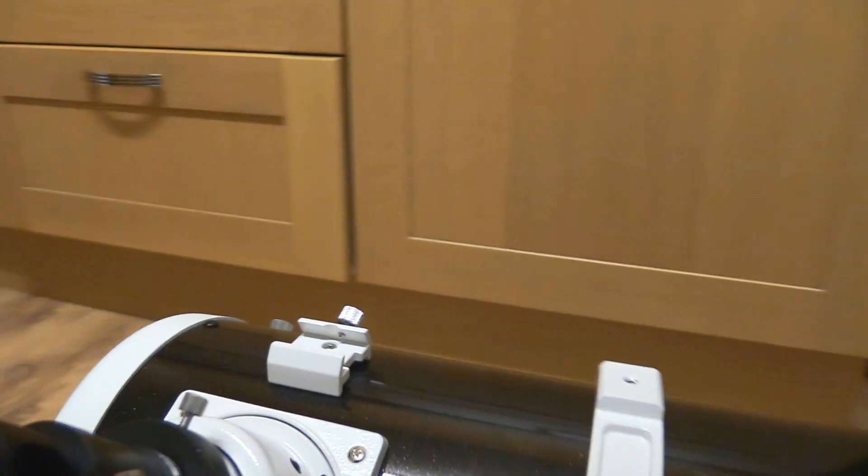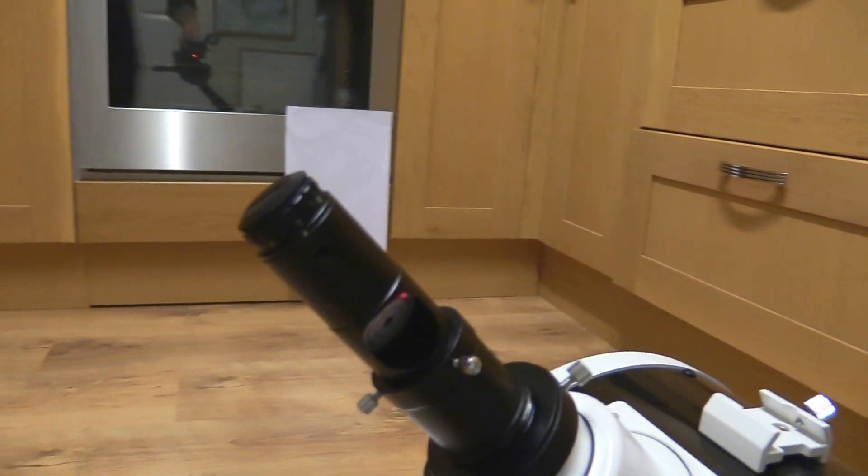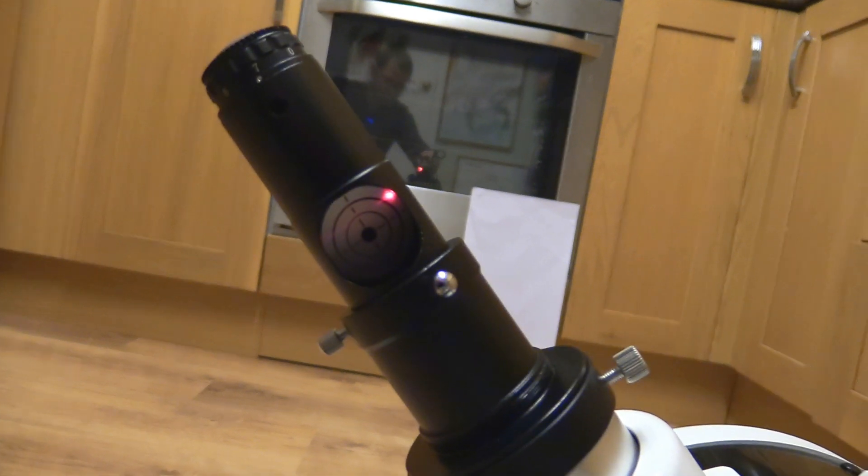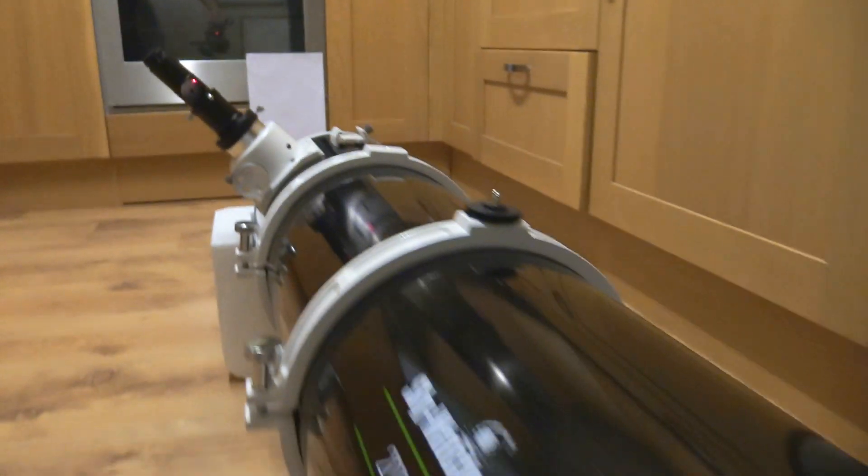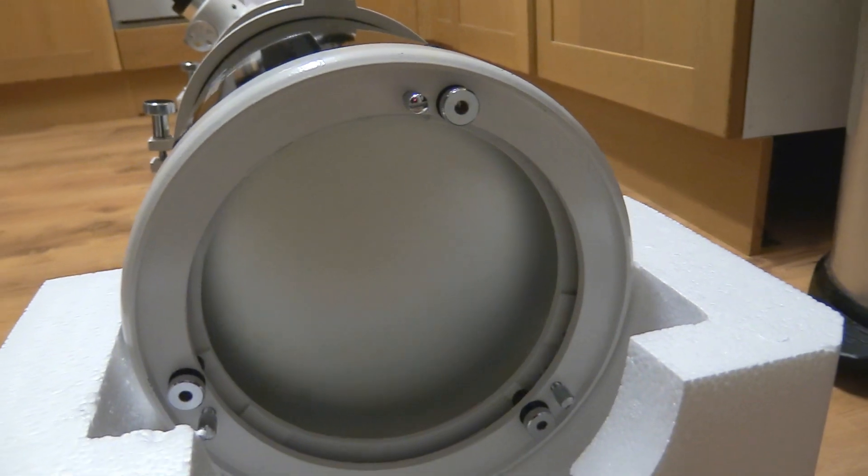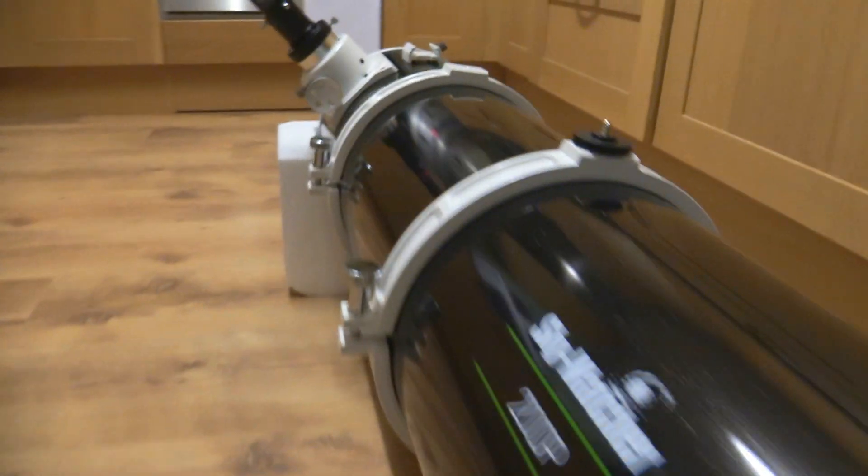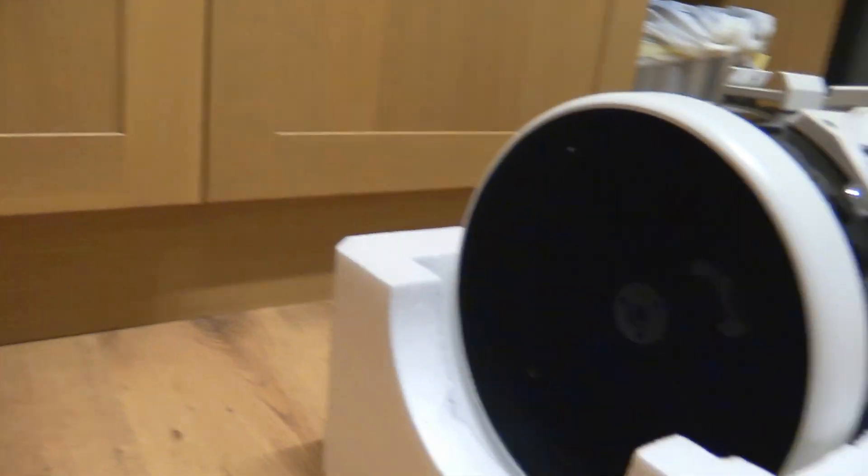I've popped the laser collimator into the focuser and I've got the target face on that laser collimator pointing down towards the bottom of the telescope where the primary mirror adjustment screws are. But before we touch those, we want to come at the business end of the telescope.